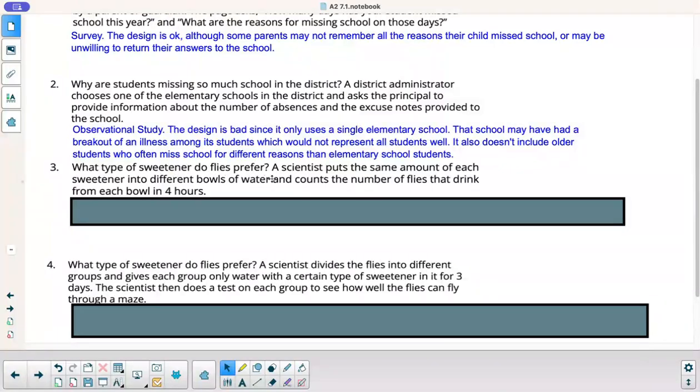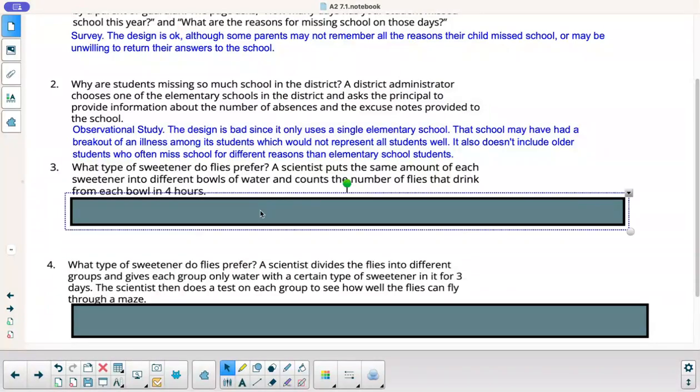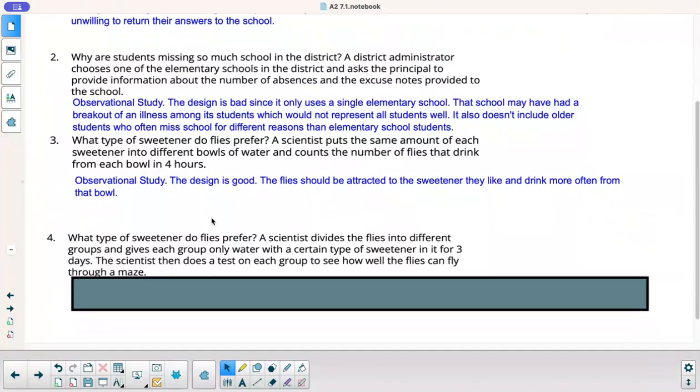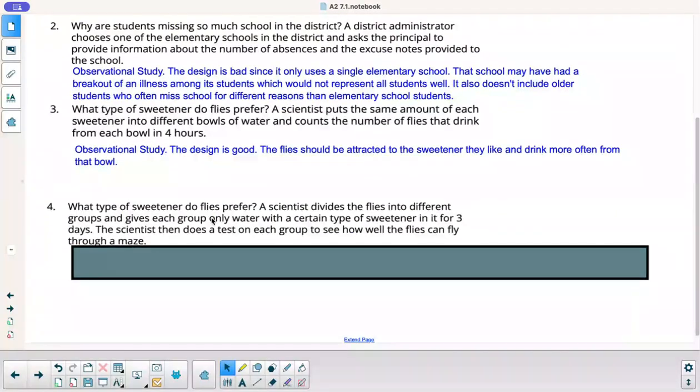All right. Number three, what type of sweetener do flies prefer? Scientists puts the same amount of each sweetener into different bowls of water and counts the number of flies that drink from each bowl in four hours. All right. This is an observational study. They're observing. They're not trying to influence anything. Design is good. The flies should be attracted to the sweetener that they like to drink more often from, and they'll drink more often from that bowl. All right. So that's not a bad study.